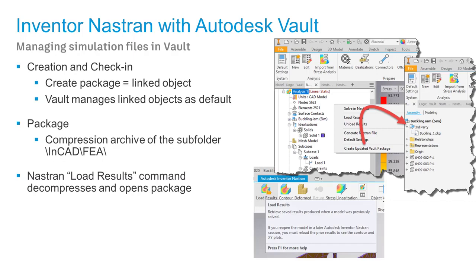You can now manage simulation files with Vault from Inventor Nastran. The package is a linked object and Vault manages linked objects by default. The package itself is a compressed archive of a subfolder, and using Nastran Load Results will decompress and open that package.